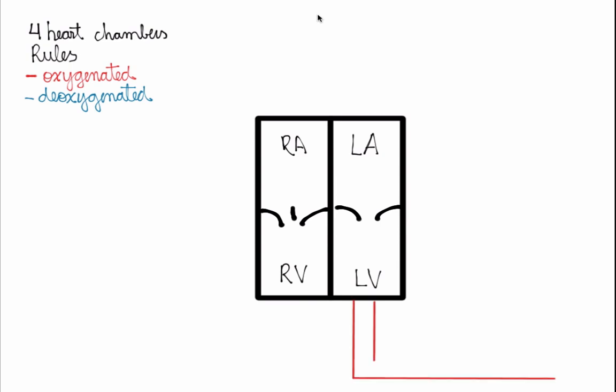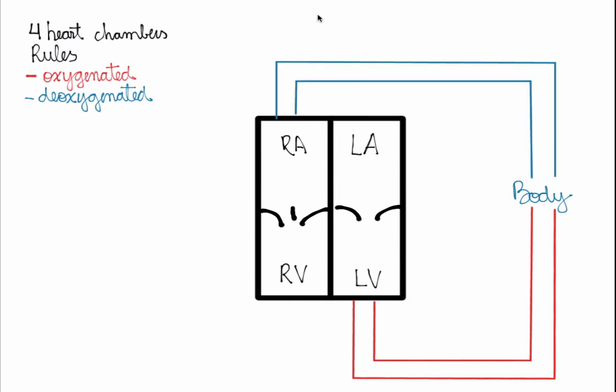Leaving the left ventricle, we have blood vessels taking oxygenated blood to the body. In the body, the tissues feed on that oxygen, and then returning from the capillaries, deoxygenated blood returns to the right atrium. This loop is your systemic circuit.